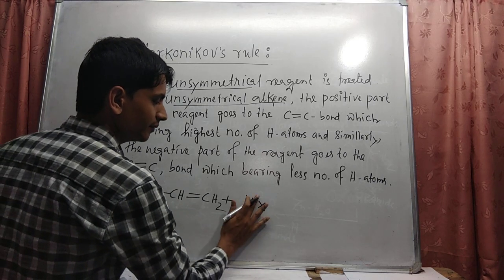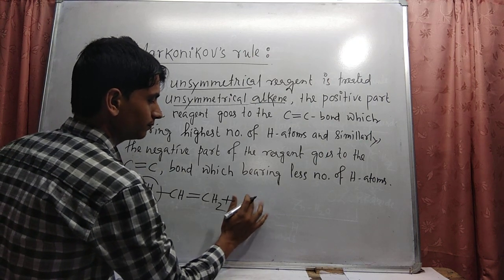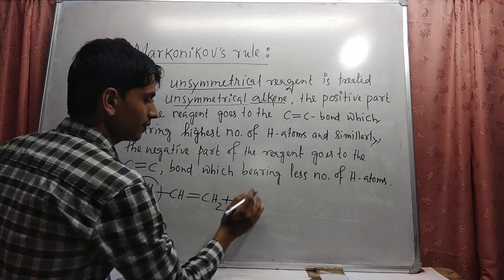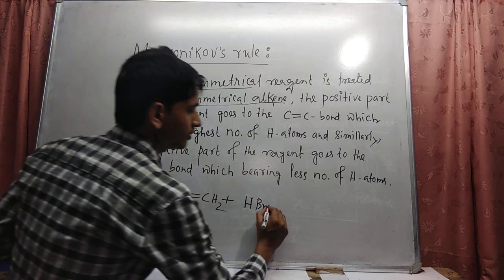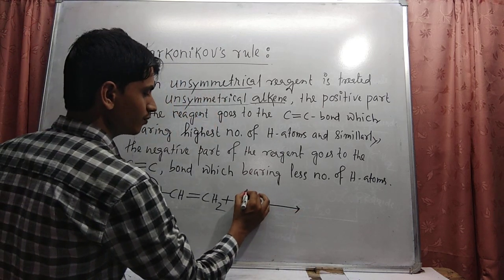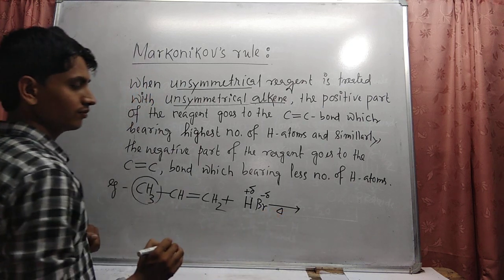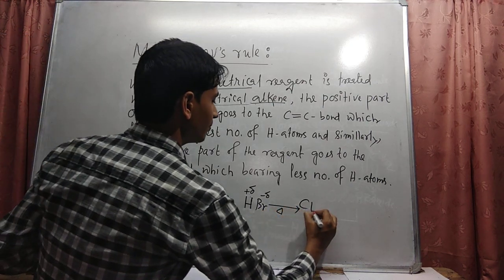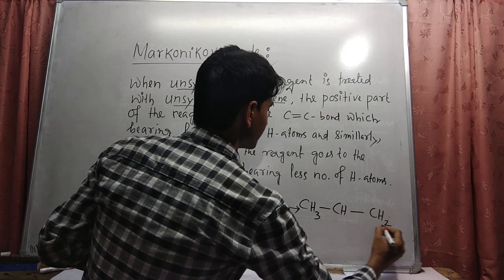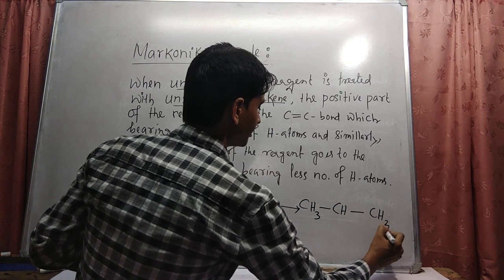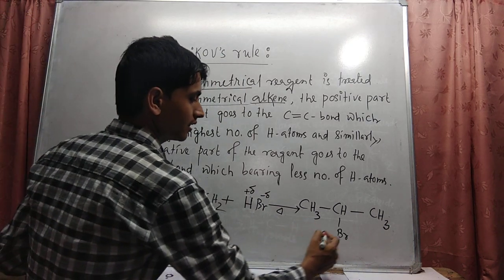It reacts with HX — where X means chlorine, bromine, or iodine. So we replace HX with HBr, which is an unsymmetrical reagent. Unsymmetrical means H is the positive part and Br is the negative part. It is treated in the presence of heat, and from this the product is formed: CH3-CH(Br)-CH3.